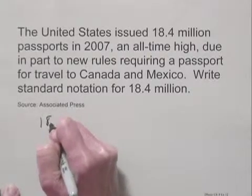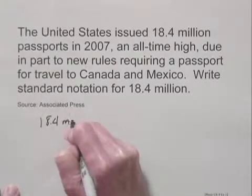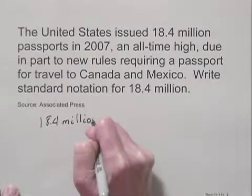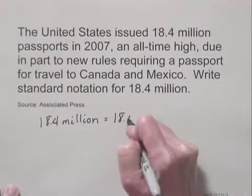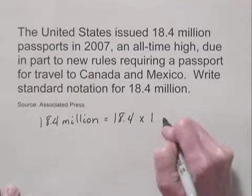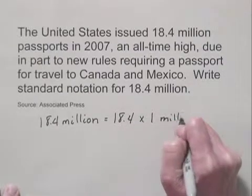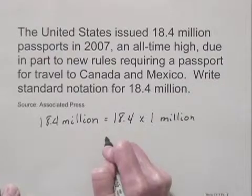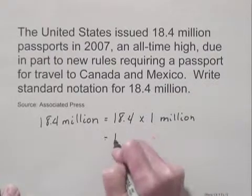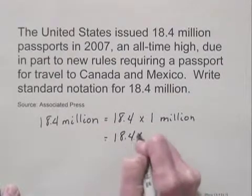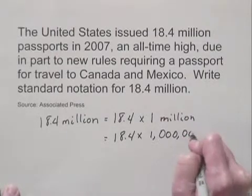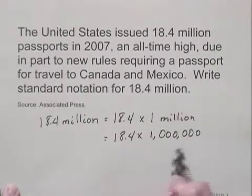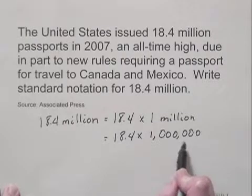Let's first write 18.4 million. This is equal to 18.4 times 1 million. And we can write 1 million as 1 followed by 6 zeros. Now we're multiplying by 1 followed by 6 zeros, which tells us that we'll be moving the decimal point 6 places to the right.